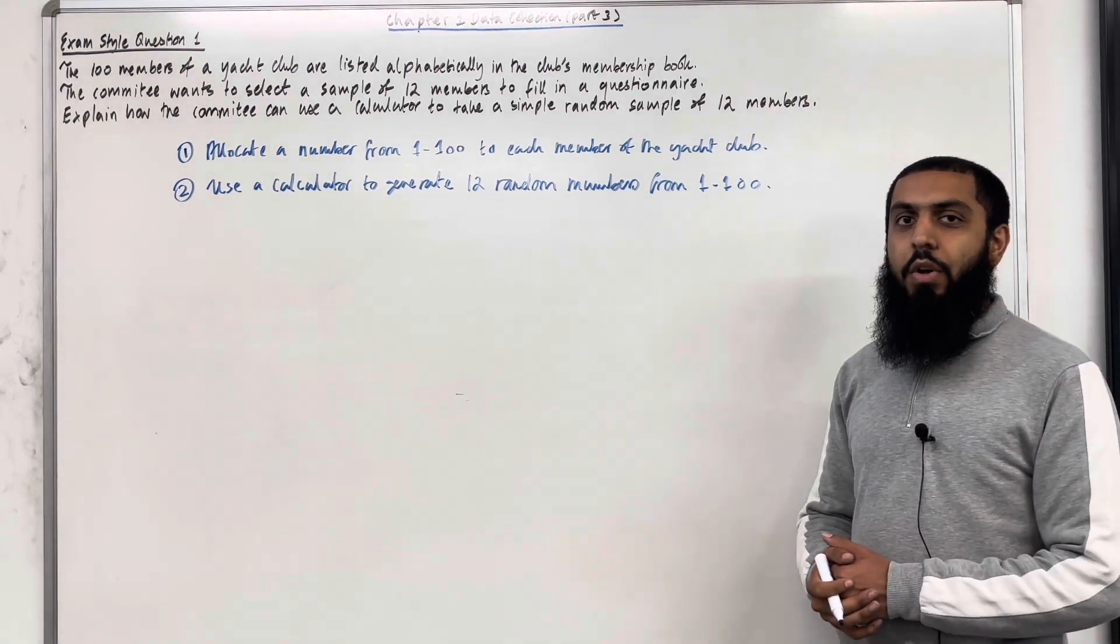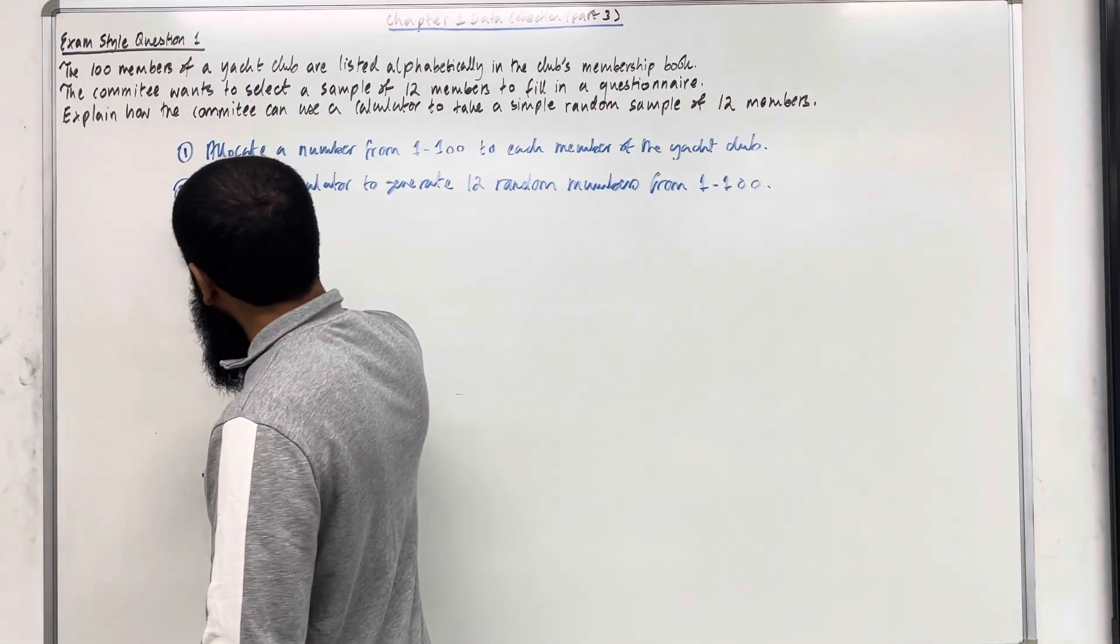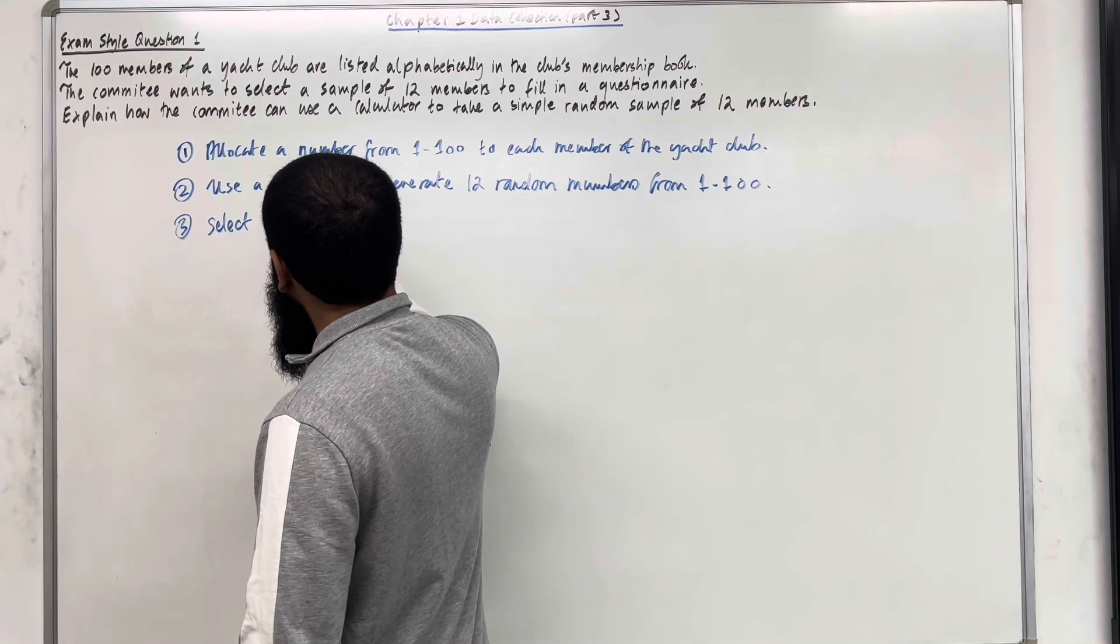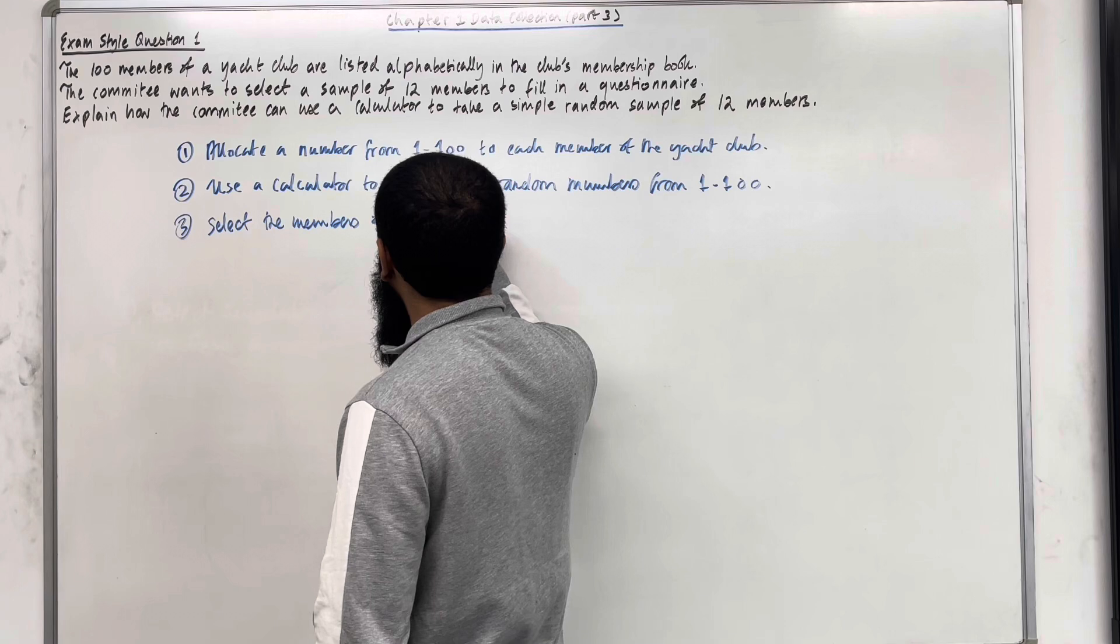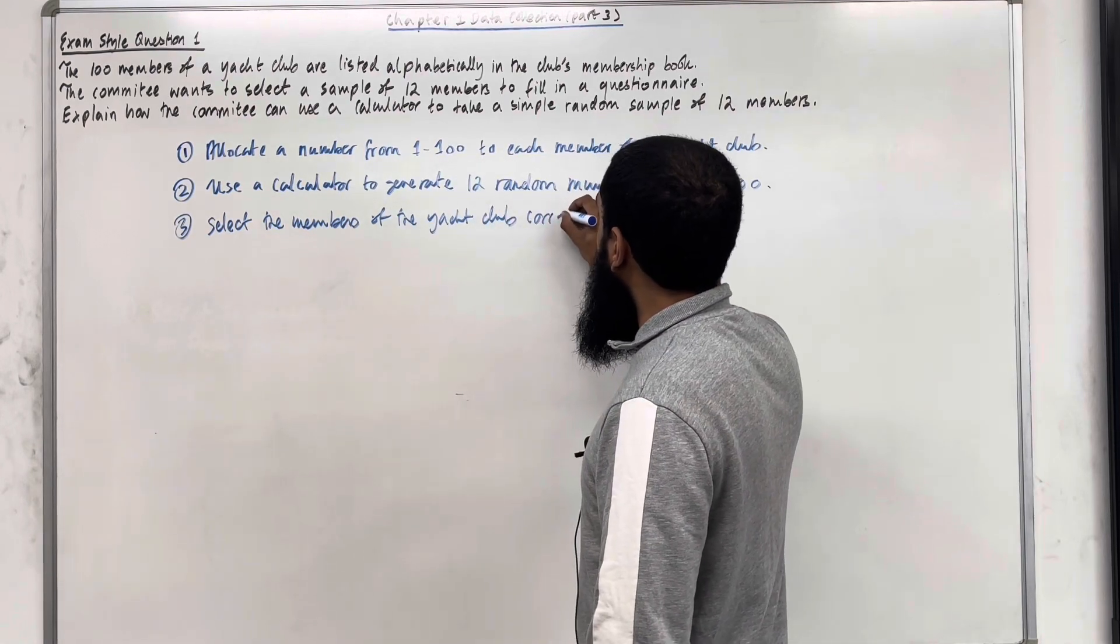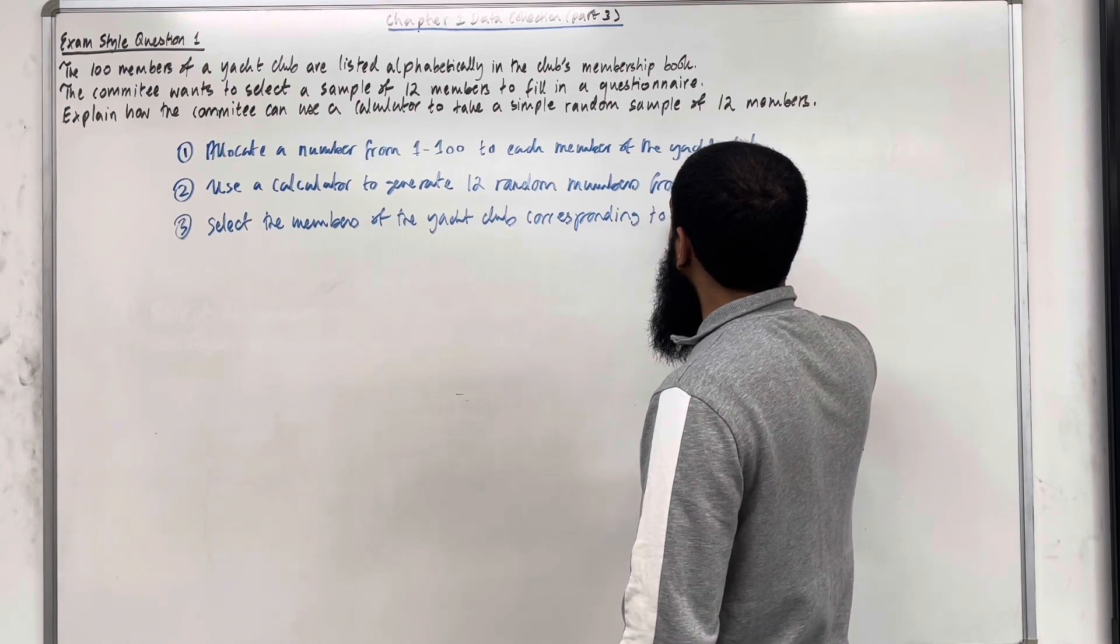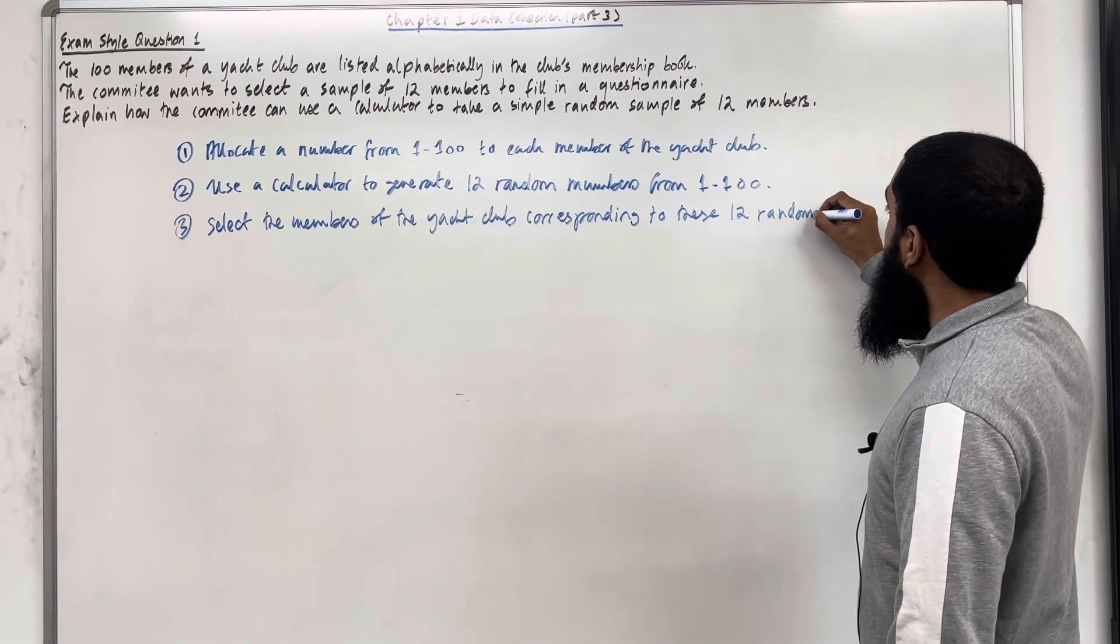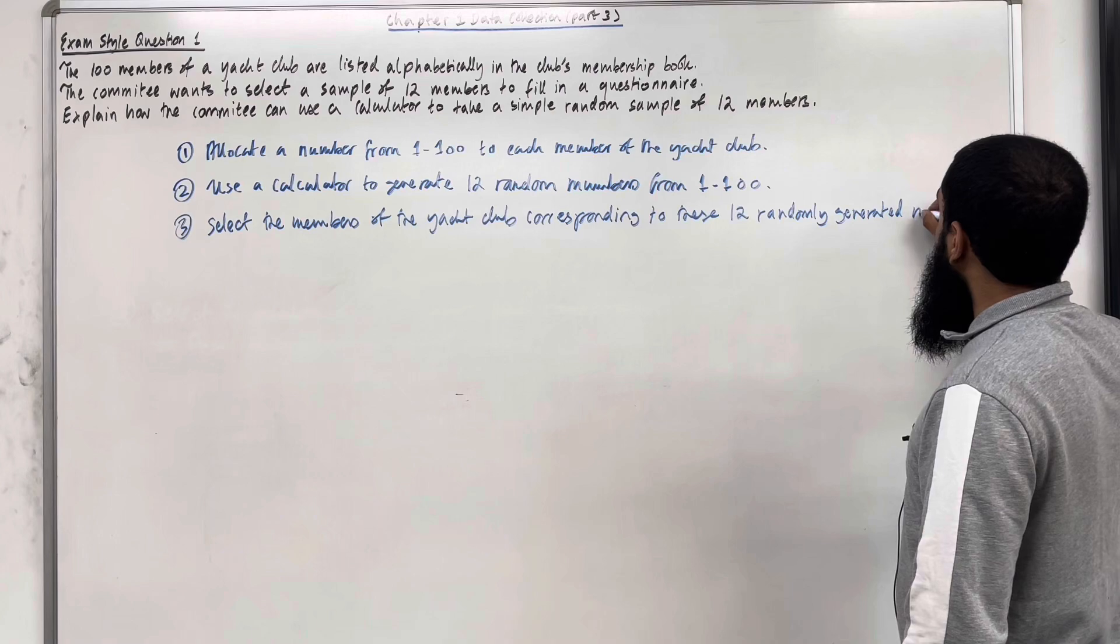And finally, moving on to step number 3: Select the members of the yacht club corresponding to these 12 randomly generated numbers.